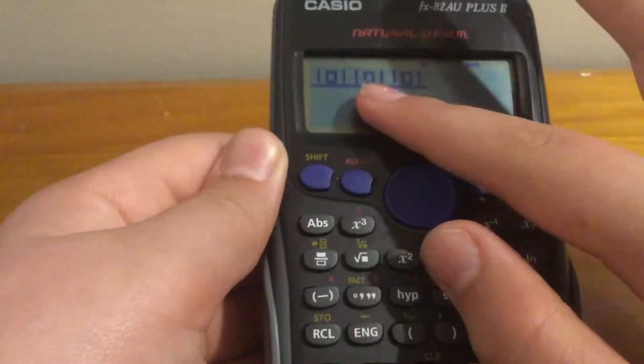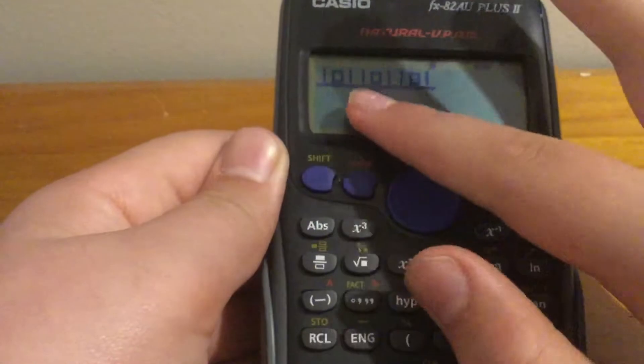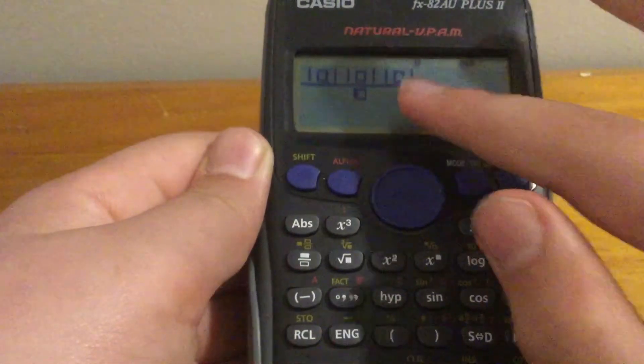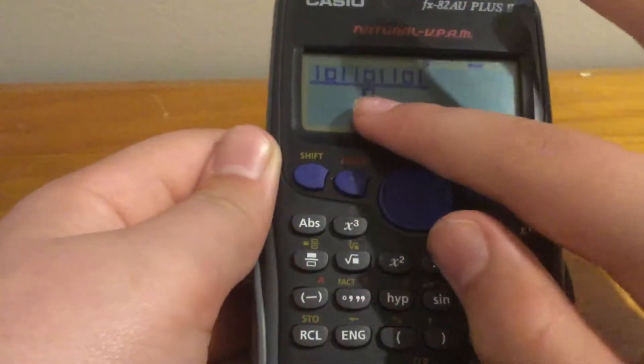So ABS, right, ABS, right, ABS, right, and then fraction.